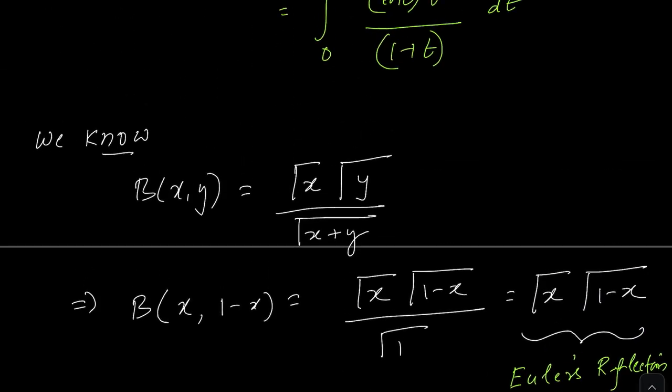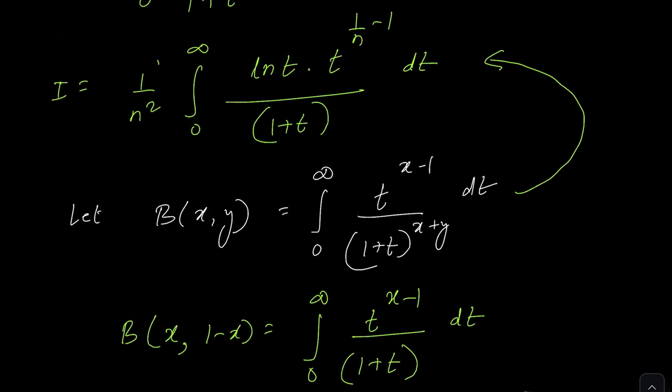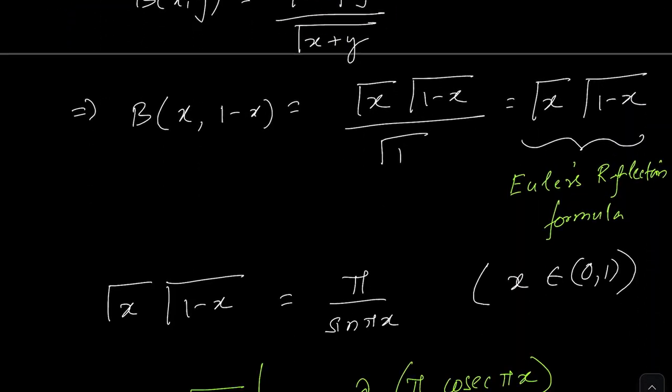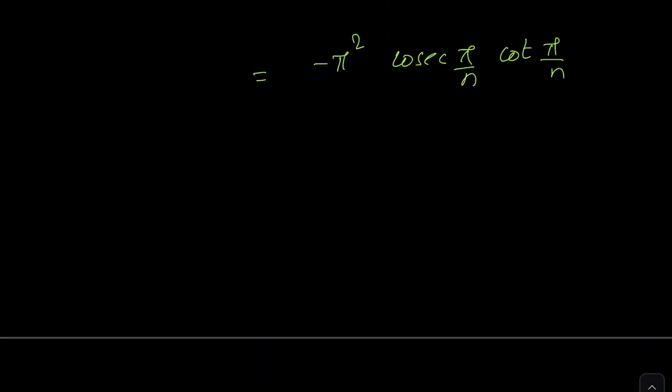Now going back to the integral, in our integral we also had this term 1 by n square as a factor sitting outside, so let us include that in my answer. So finally, finally, finally, we have come to the end of this particular solution. So it becomes minus π square by n square cosec π by n cot π by n.